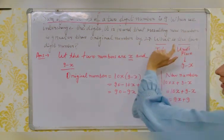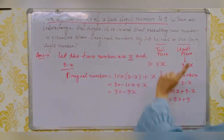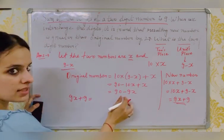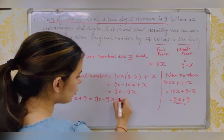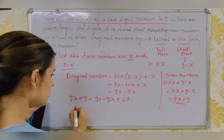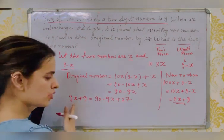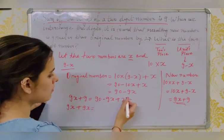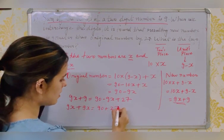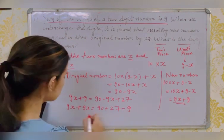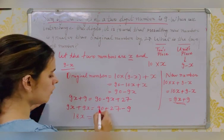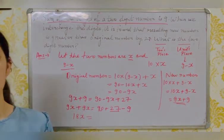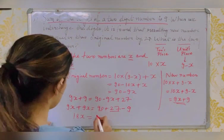Solving: 9x + 9 = 117 − 9x. Bring variables to one side: 9x + 9x = 117 − 9, so 18x = 108. Dividing both sides by 18: x = 108/18 = 6.